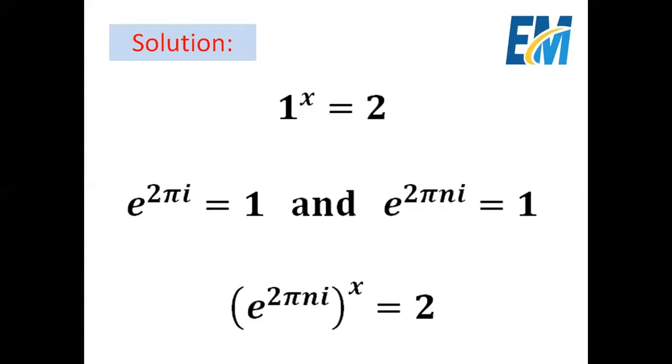We know that e power 2πi equals 1, and to be more accurate, e to the power 2πni equals 1 where n is an integer. So here instead of 1 we will write e power 2πni. So we will get e power 2πni all to the power x equals 2.